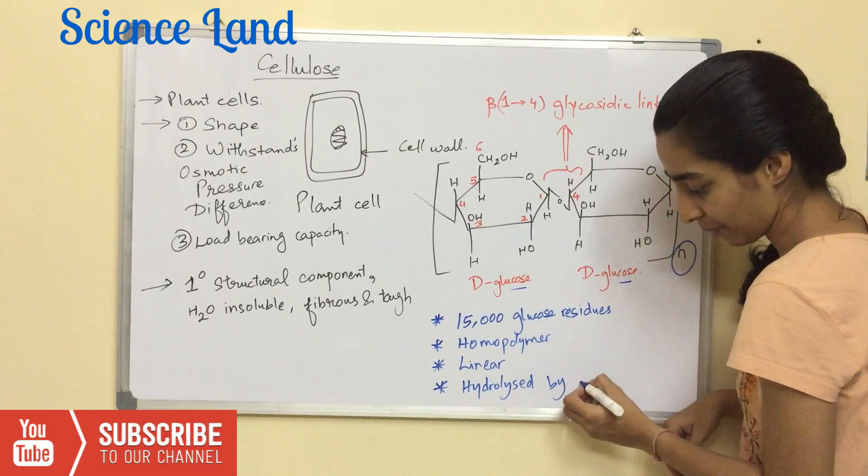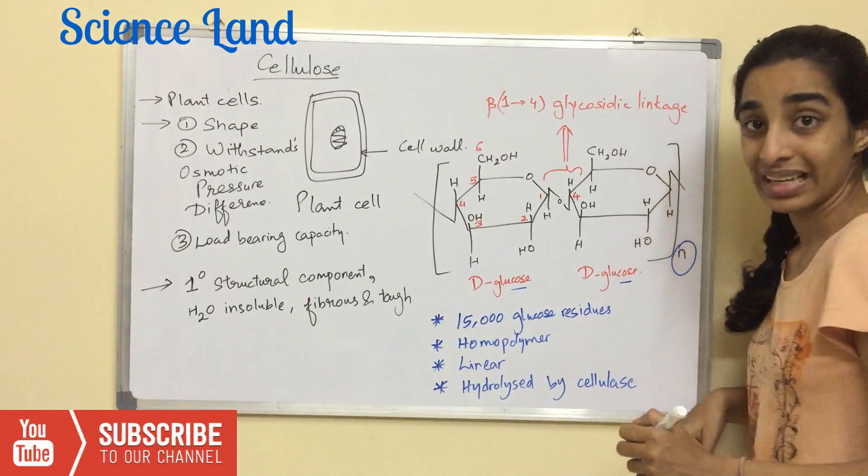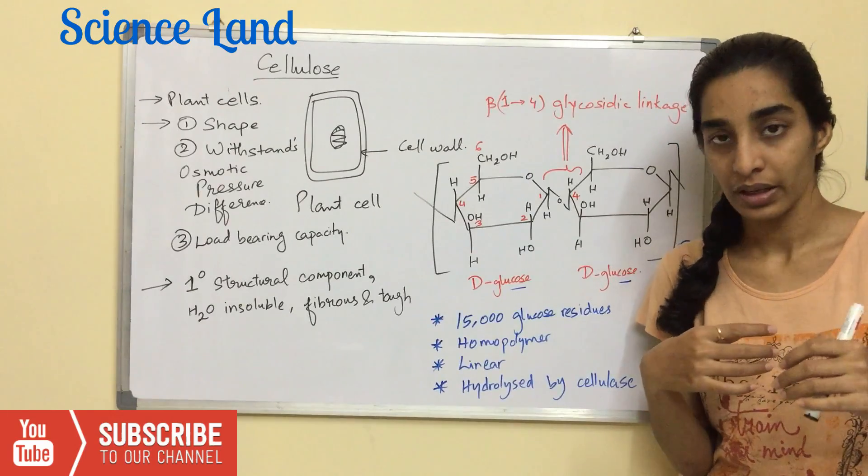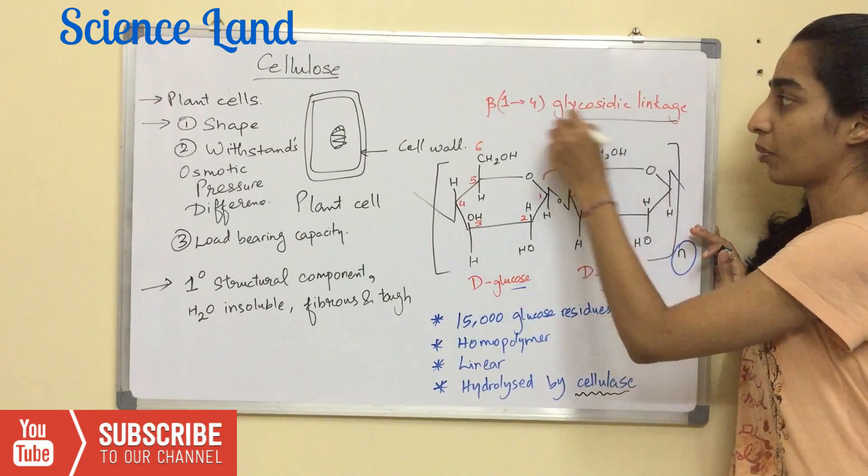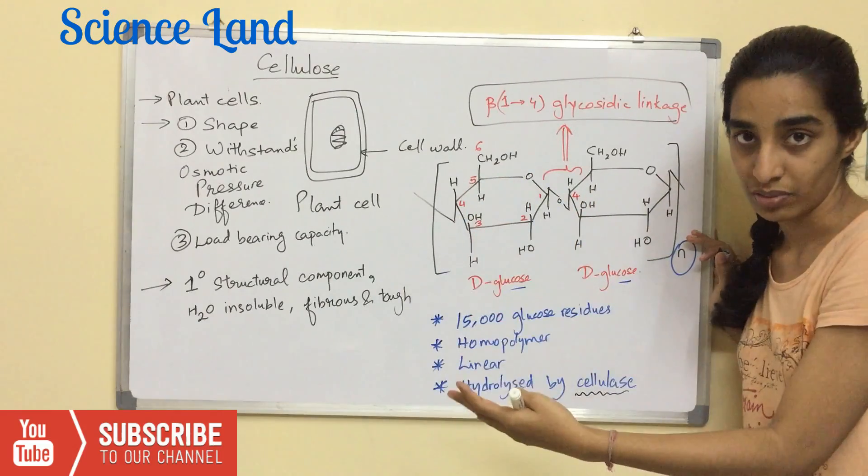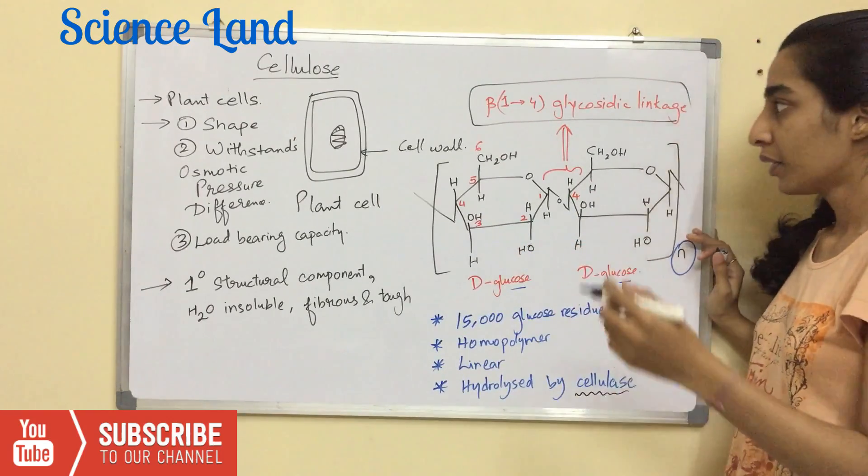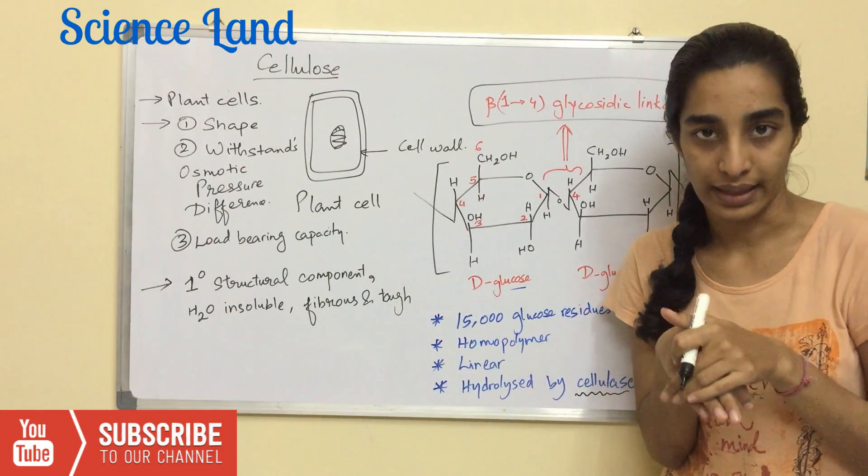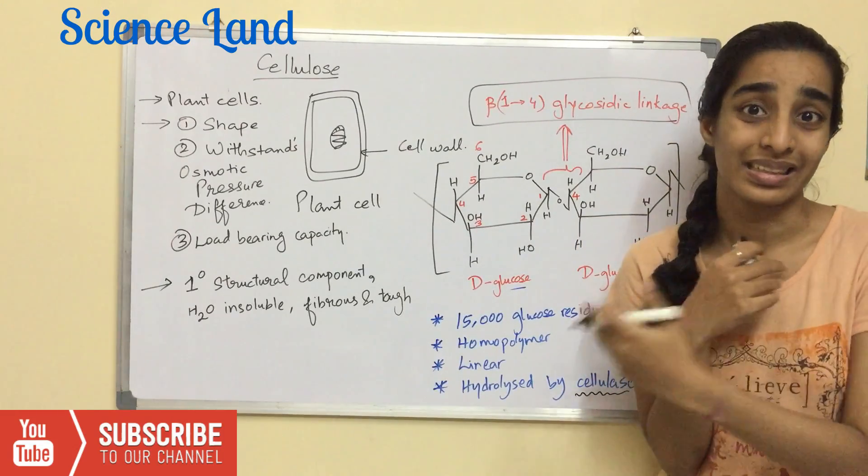Hydrolyzed by an enzyme called cellulase. Cellulase is not present in vertebrates. What does cellulase do? It hydrolyzes this particular bond. Thus, cellulose is broken down into glucose residues. It's normally present in herbivorous animals, and that also in their intestine. A symbiotic organism is present which releases this enzyme.